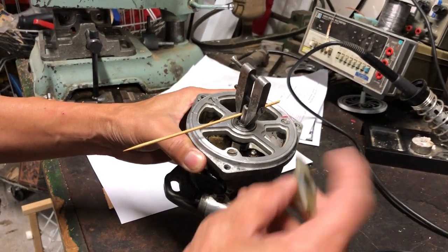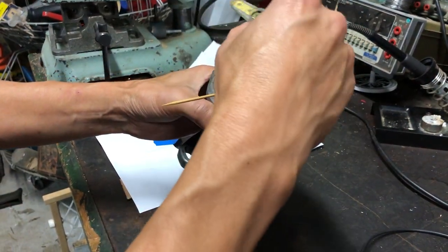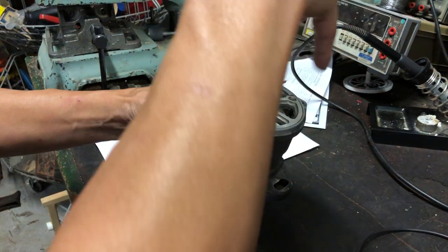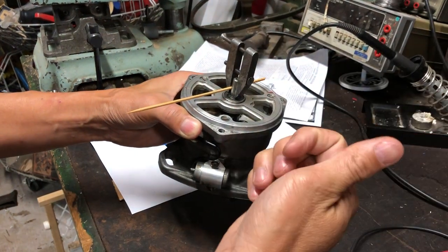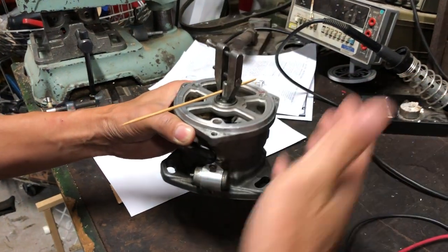If you're familiar with the distributor, this rotor is usually on top and it rotates around, and there's a distributor cap on top which the sparks are distributed to the engine. You can look that up anywhere on YouTube and see how that works.